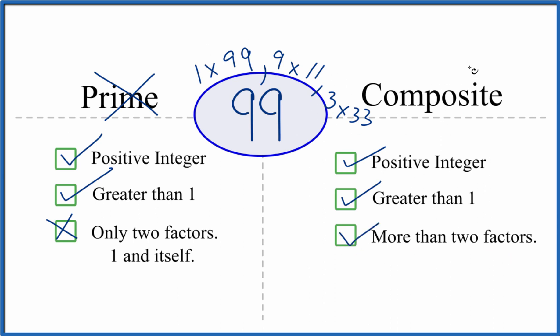So 99, it's a composite number. This is Dr. B looking at whether 99 is prime or composite. It's composite. Thanks for watching.